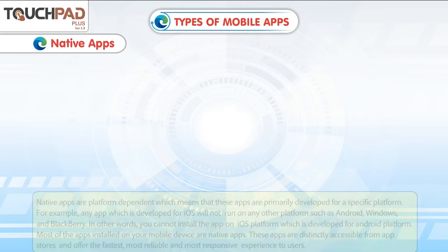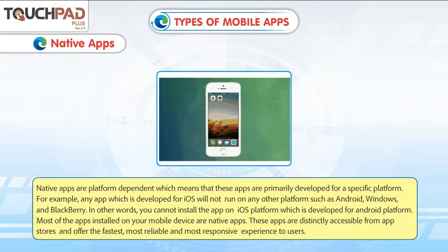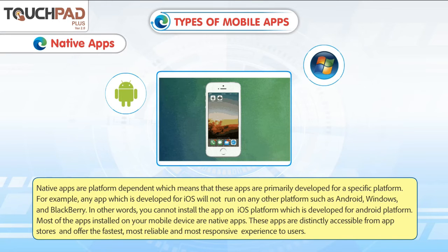Native Apps are platform dependent, which means that these apps are primarily developed for a specific platform. For example, any app which is developed for iOS will not run on any other platform such as Android, Windows and Blackberry. In other words, you cannot install the app on iOS platform which is developed for Android platform. Most of the apps installed on your mobile device are native apps.